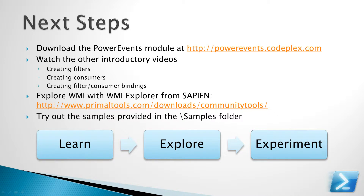So what are the next steps? This has just been an introduction to Power Events, so your next step will be to download the Power Events module at powerevents.codeplex.com. Watch the other introductory videos on creating filters, consumers, and the filter-to-consumer bindings. Then explore WMI with the WMI Explorer tool from Sapien Technologies — it's a free community tool that lets you browse around WMI and figure out what information you can detect changes to and respond to using event consumers. Finally, go ahead and experiment: try out the samples provided in the samples folder of the Power Events module, and come up with your own ideas on how you can implement permanent event consumers.